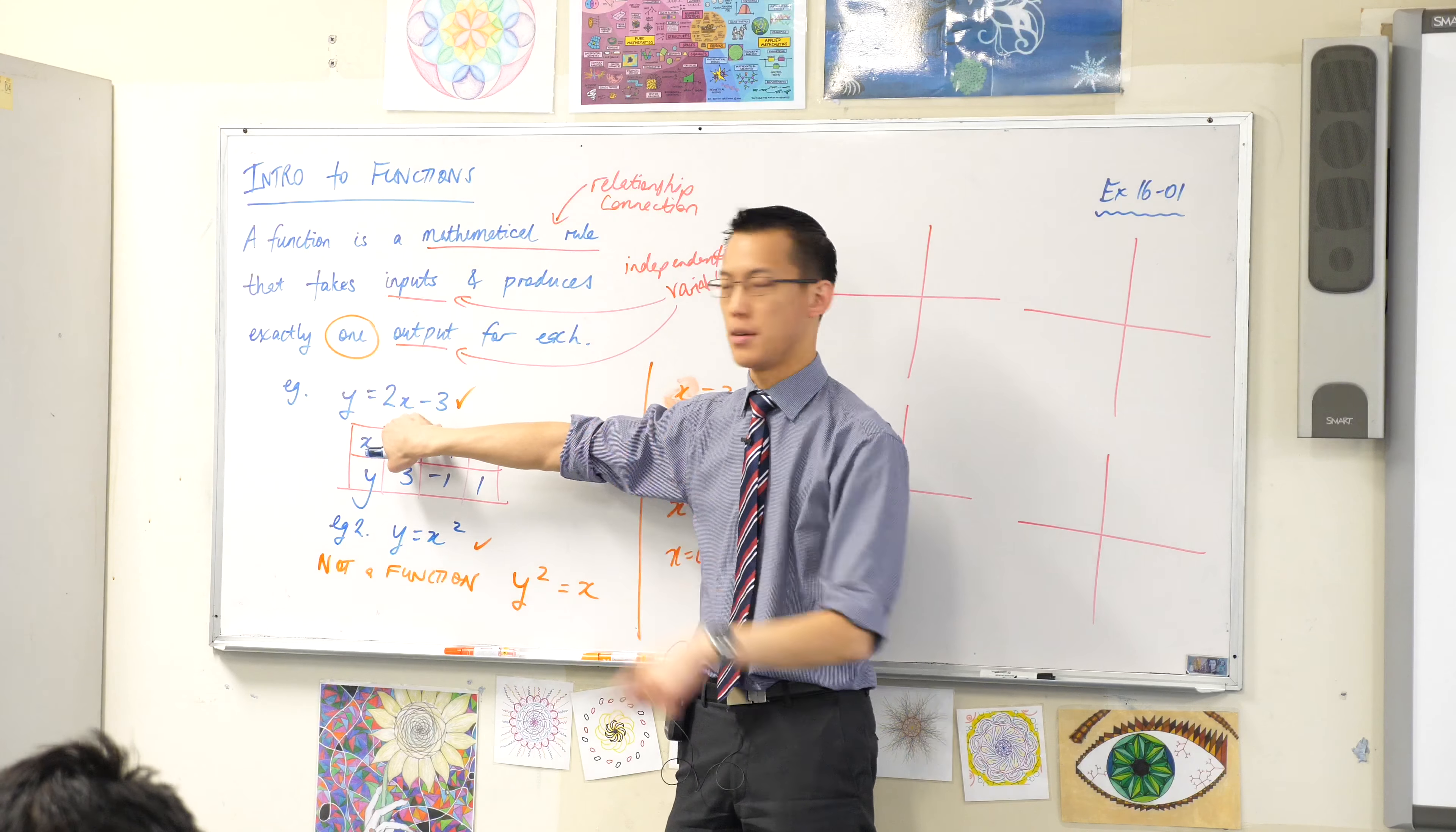As I move my ruler from left to right, do you see I only ever hit the graph once. Do you see that? Look, for example, here, there's the spot I hit. As I move, there's the spot I hit. Now here, now here. Does that make sense?